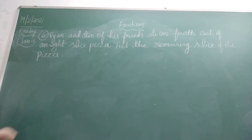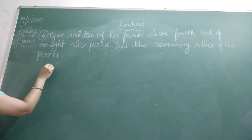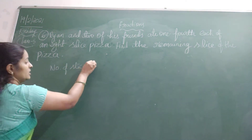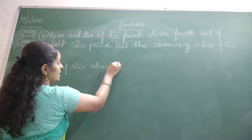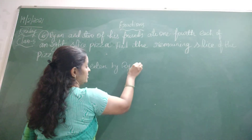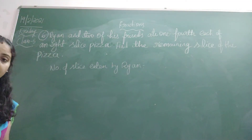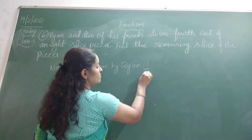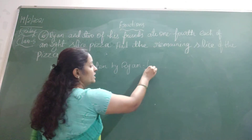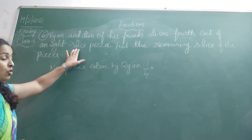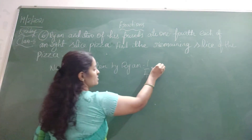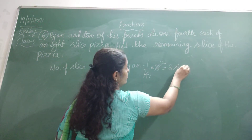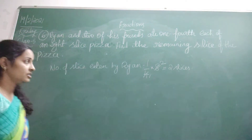So first, let us find out for Dreyan — the number of slices eaten by Dreyan. Each person has a one-fourth part of the pizza. The total complete pizza has eight slices, so we take one-fourth of eight: four ones up, four twos up — that is two slices.